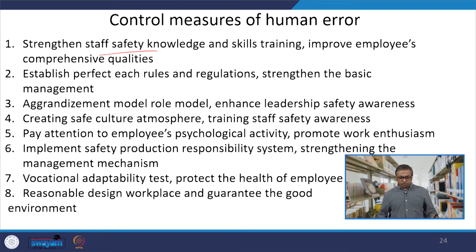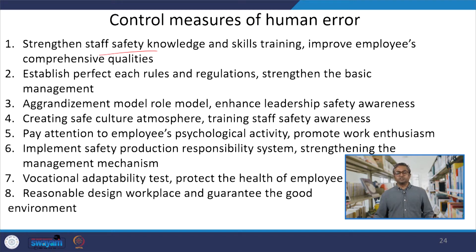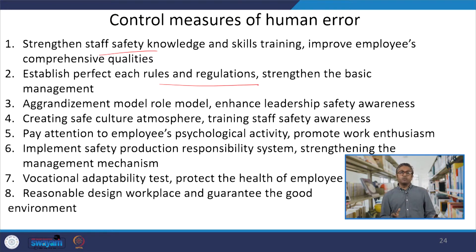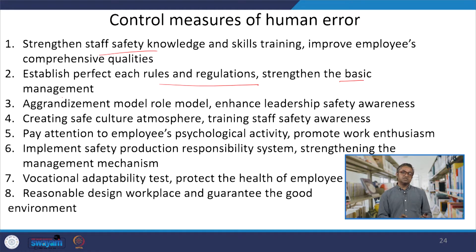The second control measure is establishing perfect match rules and regulations — strengthening the basic management system. Such rules and regulations need to be revised from time to time, not only to establish them but to ensure that periodic revision actually strengthens the basic management system. As the context changes and people join the organization regularly, such systems need to become more and more robust in nature.